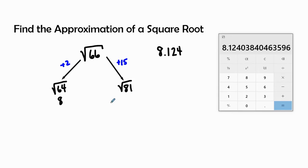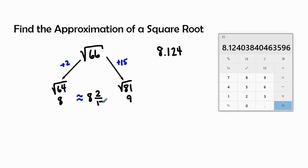When I'm finding the approximation — the approximation uses a tilted equal sign — radical 81 equals 9. So I know it's going to be 8 and 2 over 17. There are 17 spaces between radical 64 and radical 81, and we're only going to need the first 2.